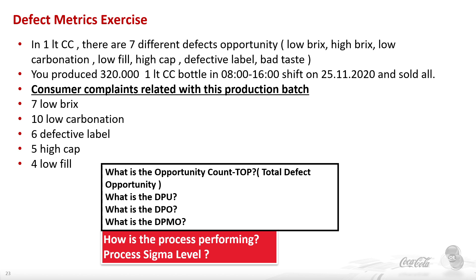Let's have a recap on an example that we were going through last time. Here, in a one-litre bottle we have seven different defect opportunities. We produced 320,000 bottles in a duration of eight hours, and we sold all of them. We received some consumer complaints from this production batch: seven low breaks, ten low carbonation, six defective labels, five high cap, and four low fill.